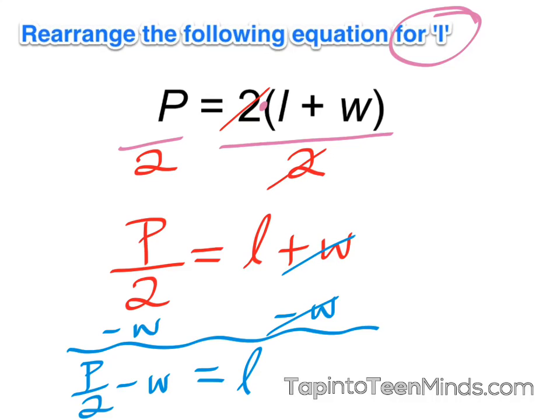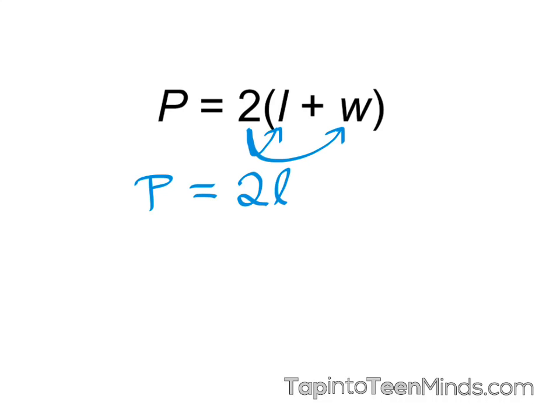To show you another way this could also be taken care of, I'm going to bring it to the next page, and we'll explore one more option. So instead of dividing out 2, what we could do is distribute. And we'll be left with p equals 2l plus 2w.